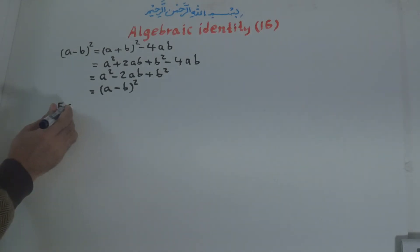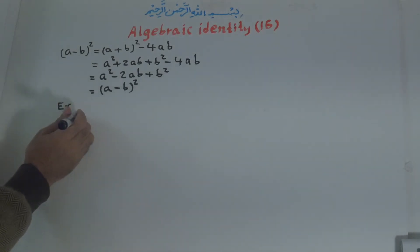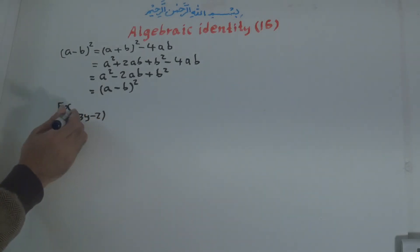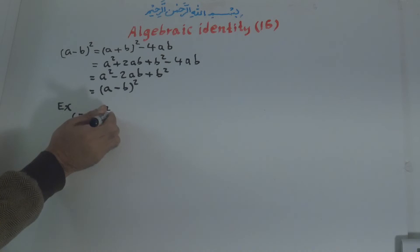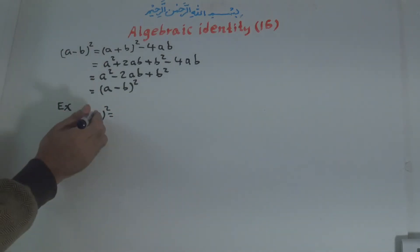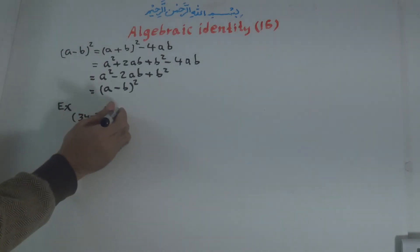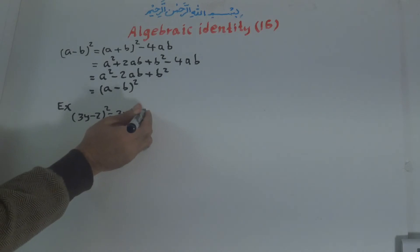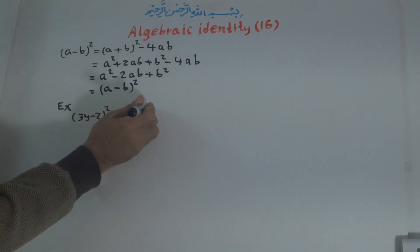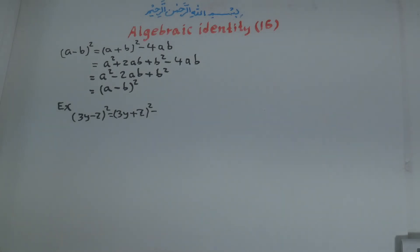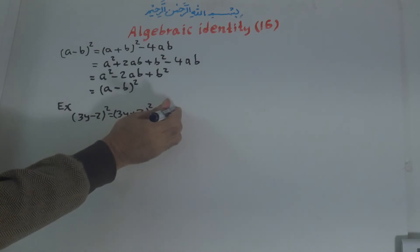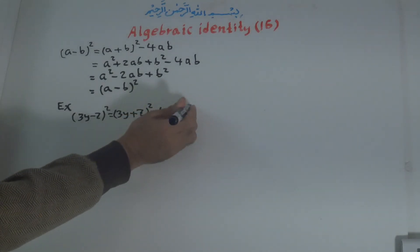Example: We apply the identity to (3y - z)². Using the formula (a - b)² = (a + b)² - 4ab, where a is 3y and b is z, we get (3y + z)² - 4 times 3y times z.